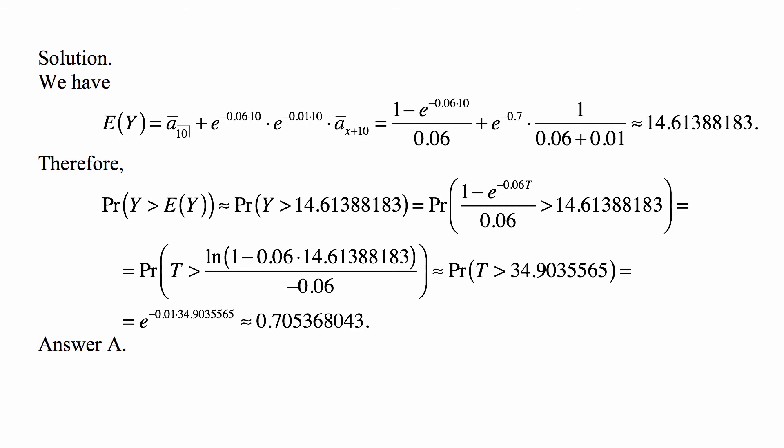And the probability that Y is more than E(Y) is the probability that Y is more than this number that we just calculated, which is 14.61388183. That's the same as the probability that (1 - e^(-0.06T))/0.06 is greater than that number, and we solve this inequality for T.